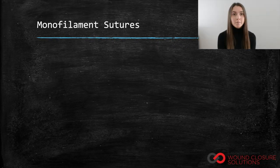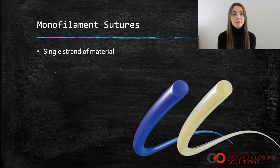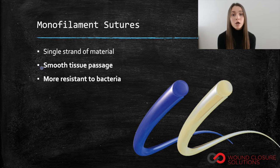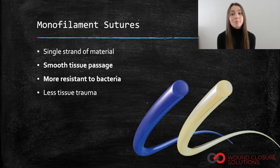Monofilament sutures consist of a single strand of material and allow for smooth tissue passage. These sutures are also more resistant to infection compared to braided suture. Monofilament sutures take up minimal surface area and are rarely associated with tissue trauma.